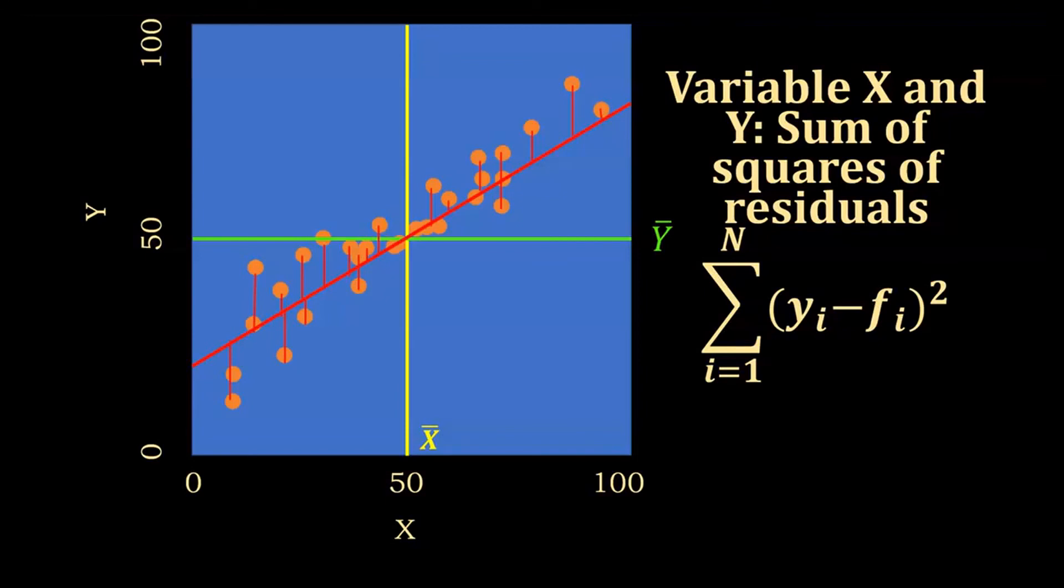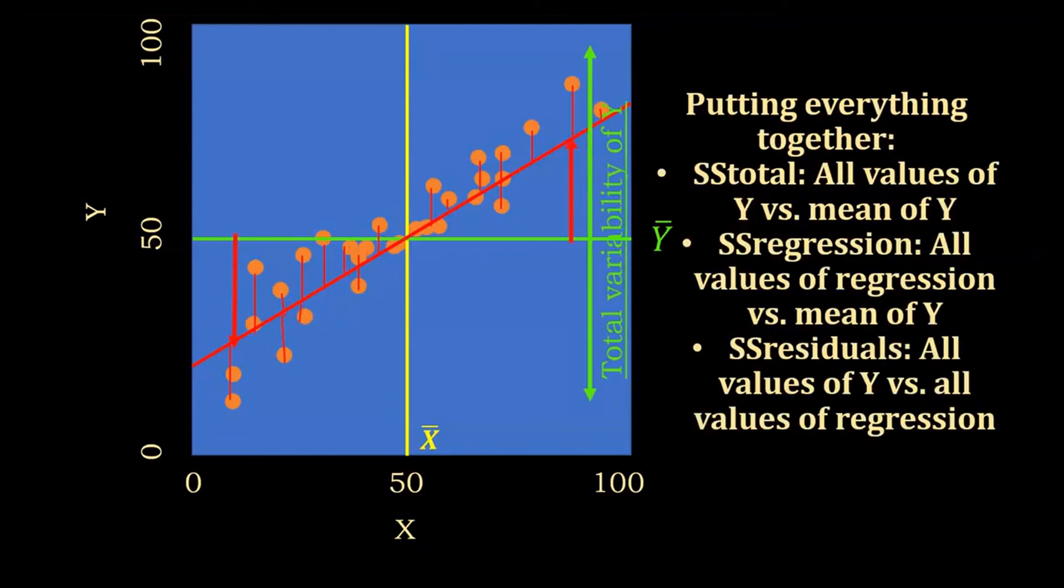Now, let's put everything together. We've got the total variability of Y, we've got the variability from the regression line to the mean of Y, and then the variability of the observations from the regression line. So we can calculate the sum of squares of these variabilities.